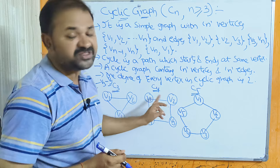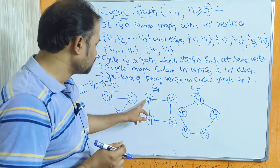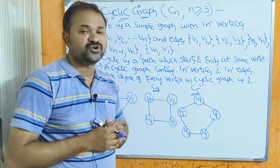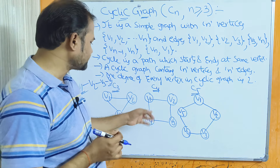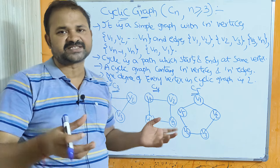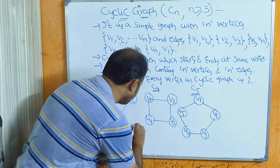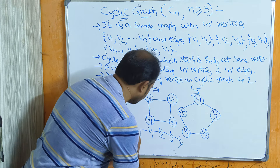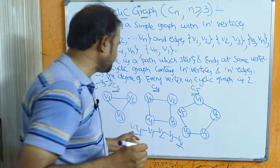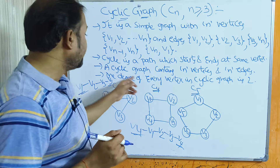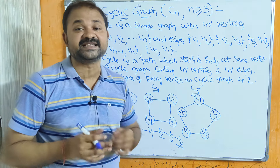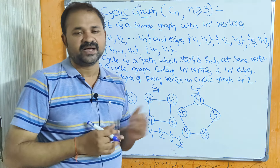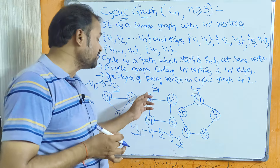C4 is a cyclic graph with 4 vertices: V1-V2, V2-V3, V3-V4, V4-V1. The path starts and ends at the same vertex — for example V4→V1→V2→V3→V4. It contains 4 vertices and 4 edges, and the degree of every vertex is 2.